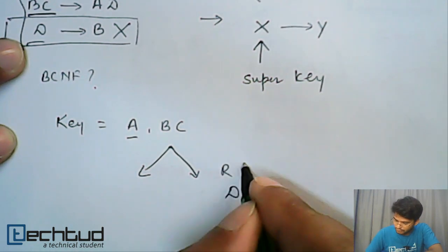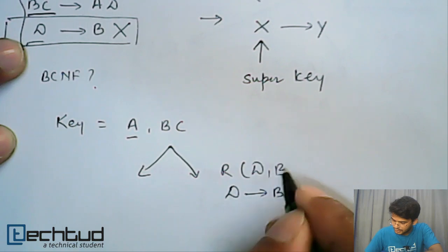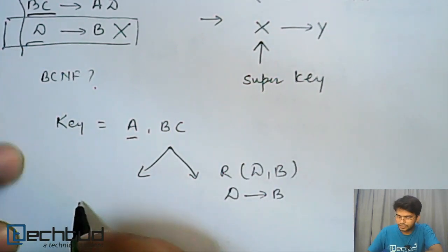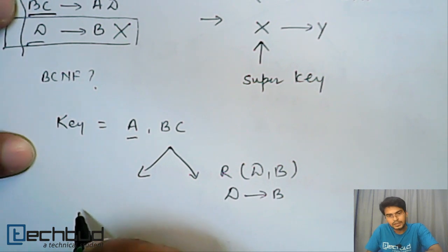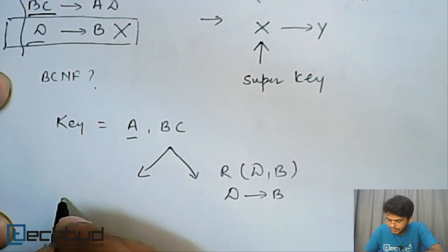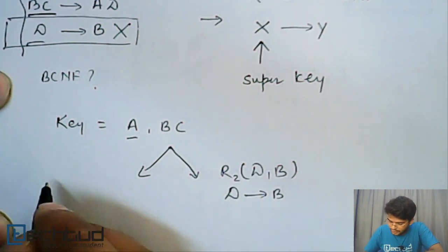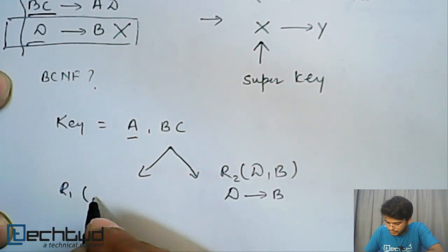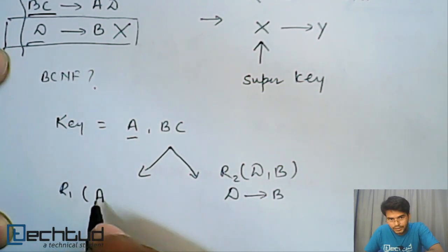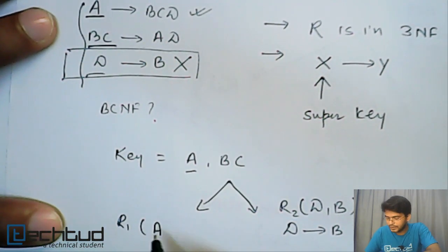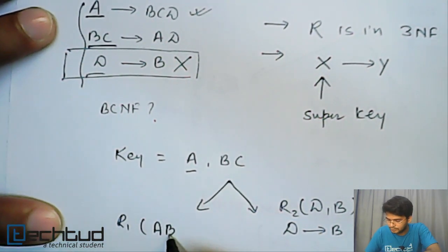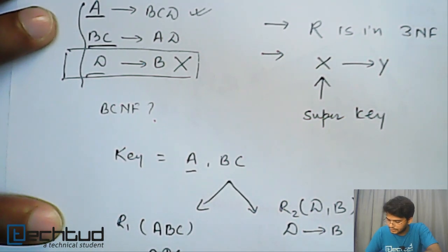So this relationship will have D and B, and here in this relationship we will have ABC or AC. So we have two options here. Let's say this is R2, this is R1. So we have two options: one is we will keep A, B, C or we can keep A, D, C.